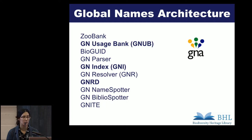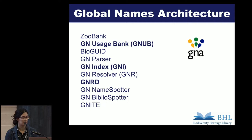These are the Global Names Usage Bank, Global Names Index, and Global Names Recognition and Discovery. The Global Names Index and Global Names Usage Bank are central components of what makes up the Global Names Architecture, and this is what actually allows for the semantic linking across the scientific databases. The Global Names Recognition and Discovery Tool is what BHL specifically uses to index their own scientific names.